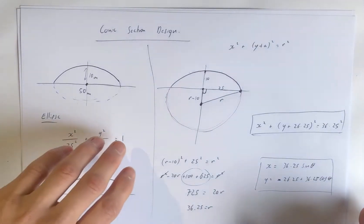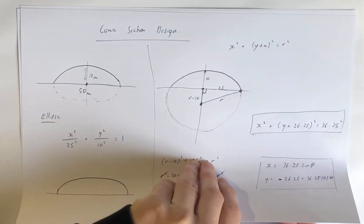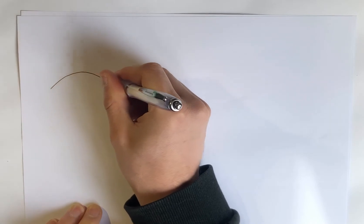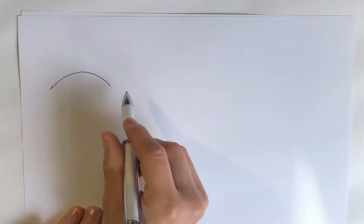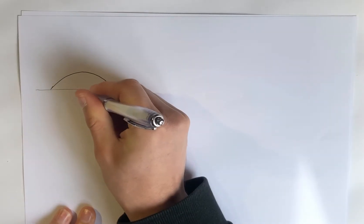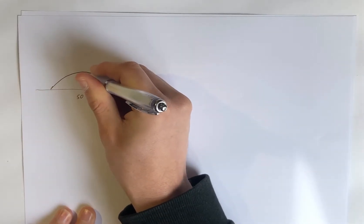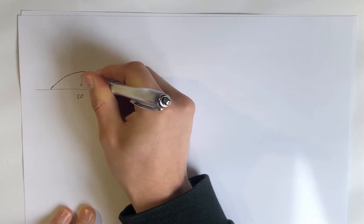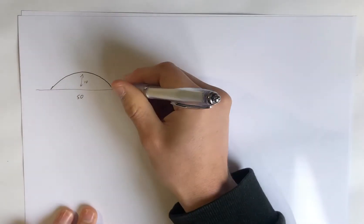And so I'm going to run you through how you would do this for a parabola now. So you could give that a go yourself. So it's going to be, we're going to go parabolic. I'm not drawing them all too dissimilarly. We're going to go 50 wide and that was 10 high, wasn't it? So 10 high.